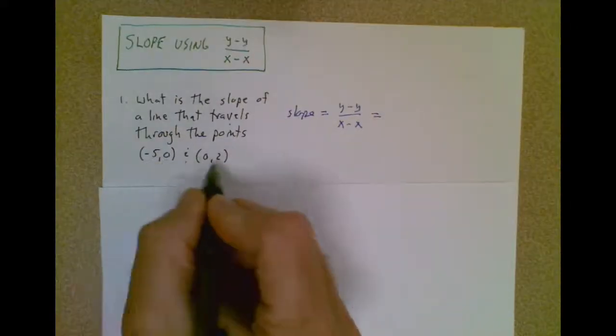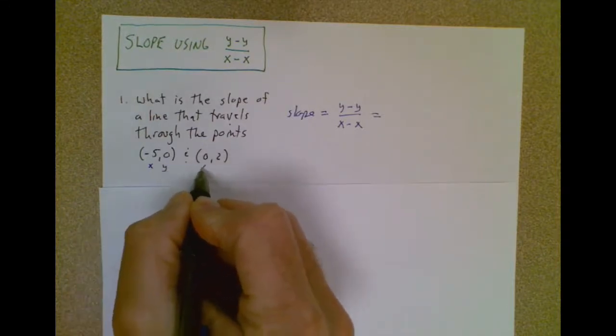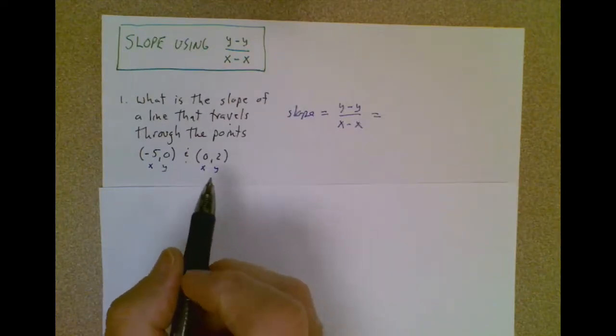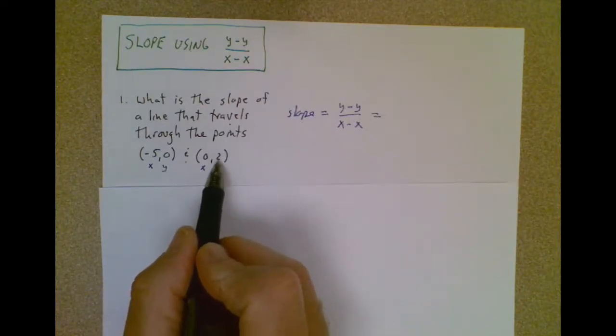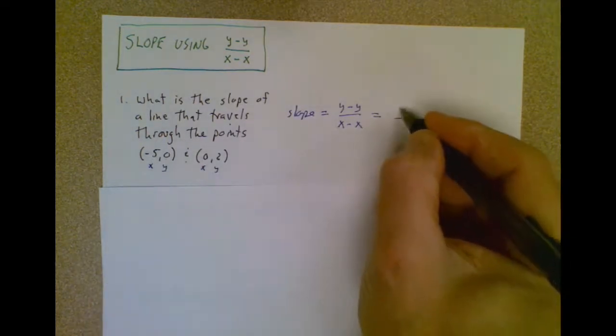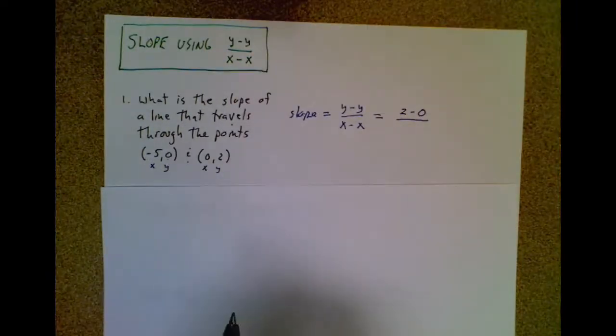If you think about these two ordered pairs, they have an x and a y, an x and a y. Be careful not to mix those up. And now, I just choose my y and my other y, a 2 and a 0, and I just say 2 minus 0. y minus y, 2 minus 0.